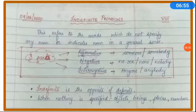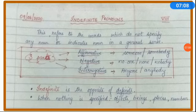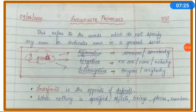Let us look at some examples. These just refer to words which do not specify any noun, or it indicates a noun in a general sense. Indefinite is the opposite of definite. So indefinite pronouns are used when nothing is specified — a place is not specified, a person is not specified, numbers are not specified, objects are not specified. All these words that we use to represent something are called indefinite pronouns.